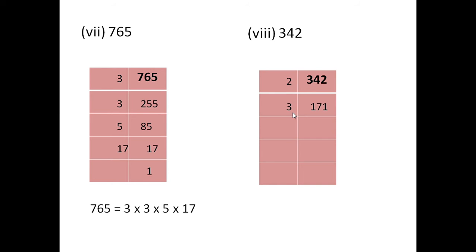So, we will take 3 as the next factor. When you divide 171 by 3, you will get 57. Children, you have to do this division on rough paper. Again, 57 is an odd number. We will check the test for divisibility by 3: 5 plus 7 is 12. 12 is divisible by 3. Therefore, 57 is divisible by 3. Again we take 3 as the prime factor. When you divide 57 by 3, you will get 19, and 19 is again a prime number.